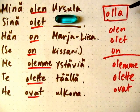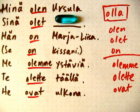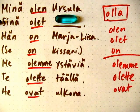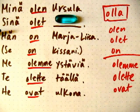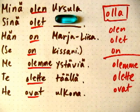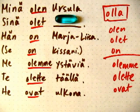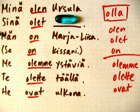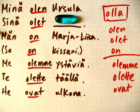To start, we have Minä olen Ursula. Sinä olet sairas — sick. Hän on Maria-Liisa. Hän, again, is for either a woman or a man — it's either she or he. In this case Maria-Liisa is a woman's name. Hän on Maria-Liisa — she is Maria-Liisa.